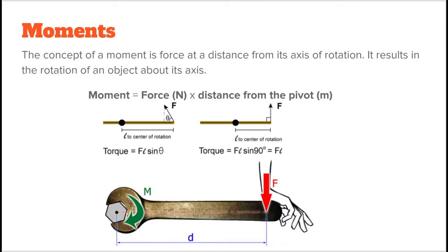Here we have a picture of a moment being applied to a wrench. A force is applied a distance D from the bolt, which is our axis of rotation. Due to this moment, the wrench rotates around the bolt.